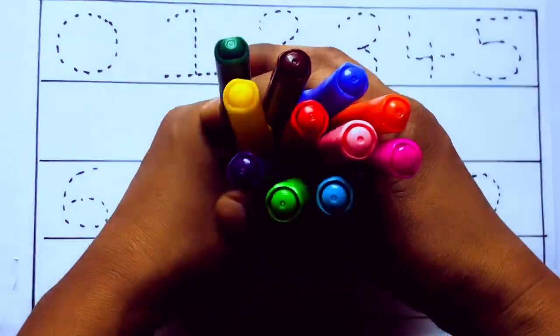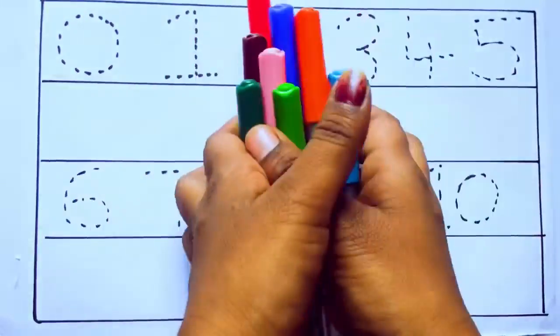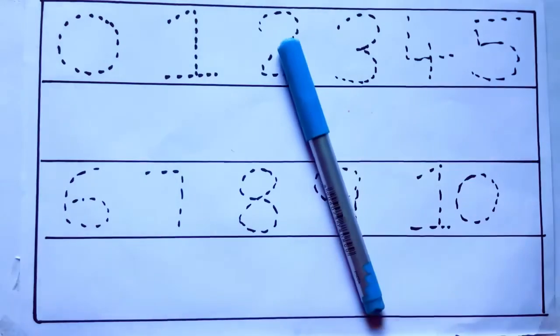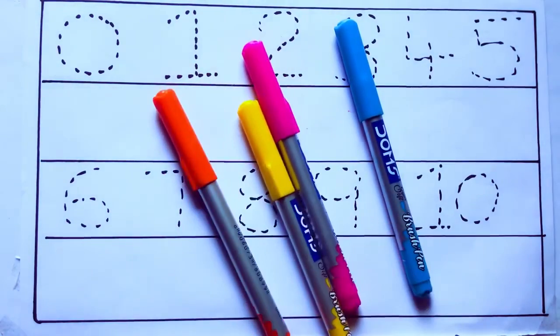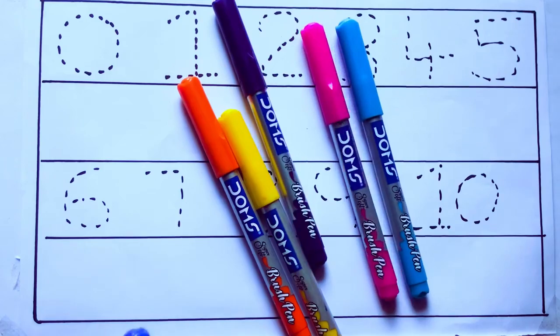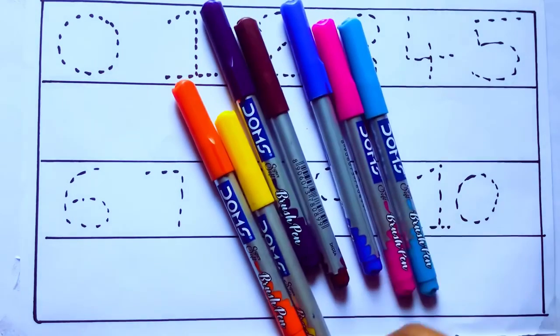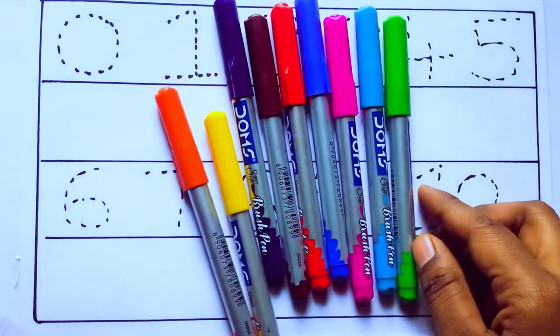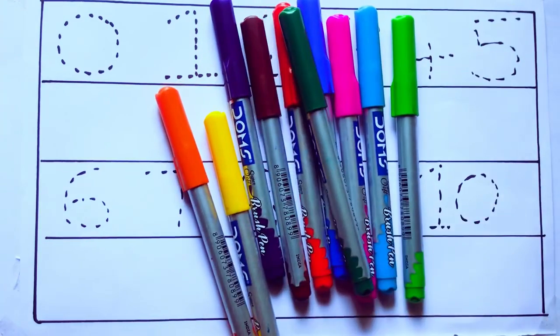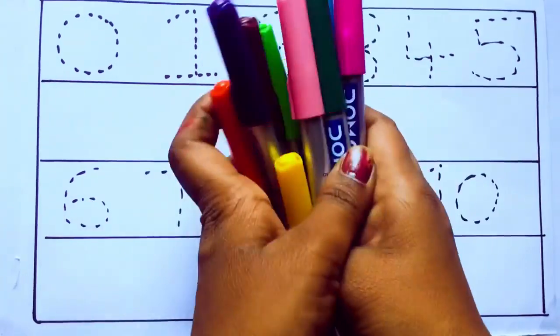Let's learn some colors. These are all the color pencils. Let's learn the names: sky blue color, pink color, yellow color, orange color, violet color, blue color, brown color, red color, green color, and pink color.